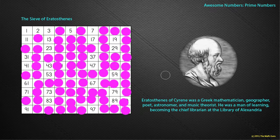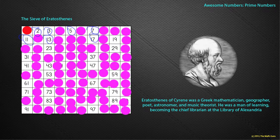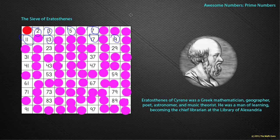Then he noticed something quite interesting. If you look at what is now left uncovered — well, first I'm going to cover over the number one, because it has lots of properties but doesn't quite fit. And what we find is a very interesting group of numbers. Eratosthenes found that numbers like 2, 3, 5, 7, 11, 13, 17, 19 and so on don't appear in any other times tables other than the one times table and their own, meaning they only have two factors.